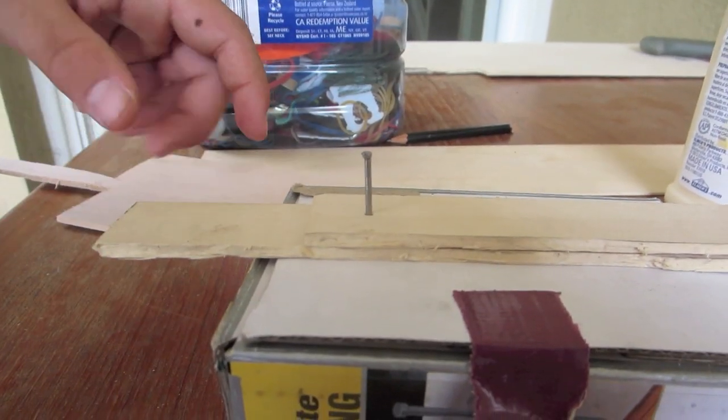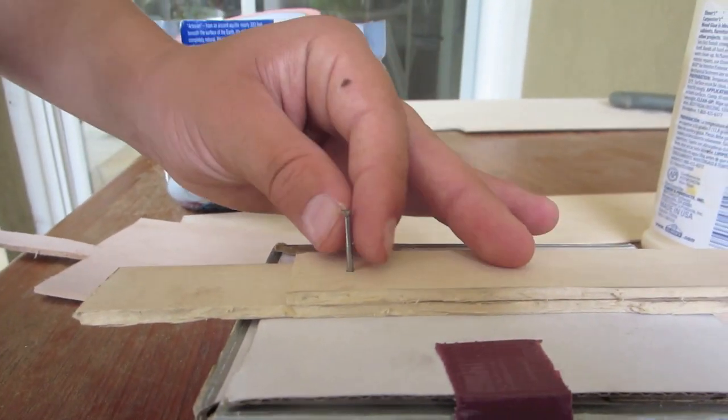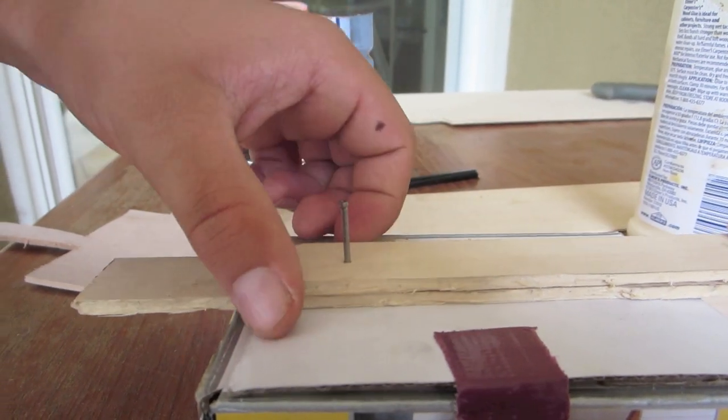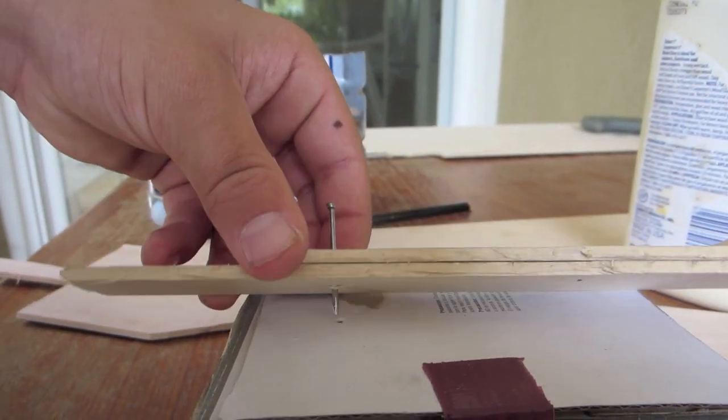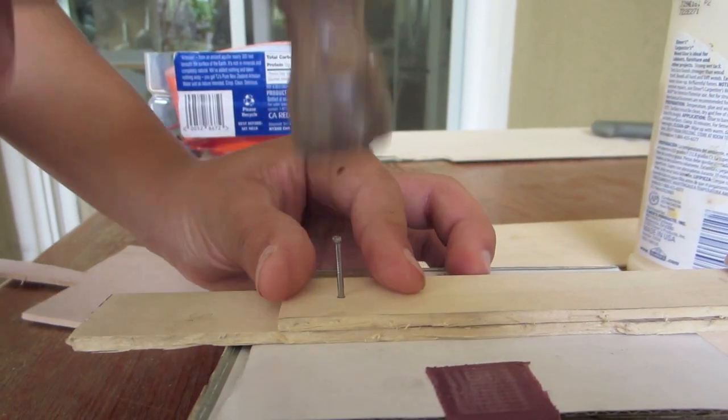You actually don't want the piece of wood underneath it like another piece of wood. Just have some cardboard that's like a box. That way you don't hammer the wood into it.